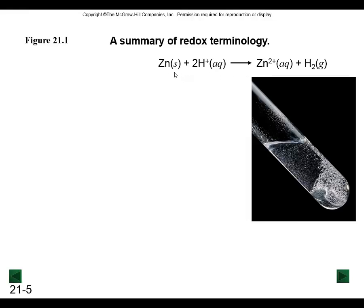The oxidation state for zinc to begin with is zero for the element when it's by itself without any other elements combined with it. The hydrogen cation, as a monoatomic ion, has an oxidation number the same as its charge - so it's a plus one.